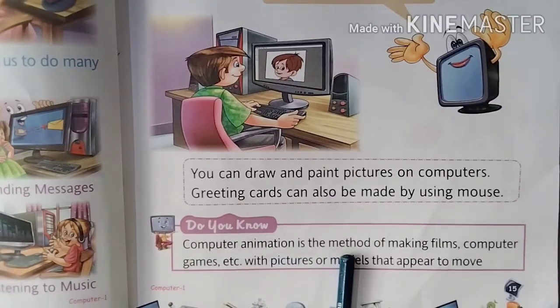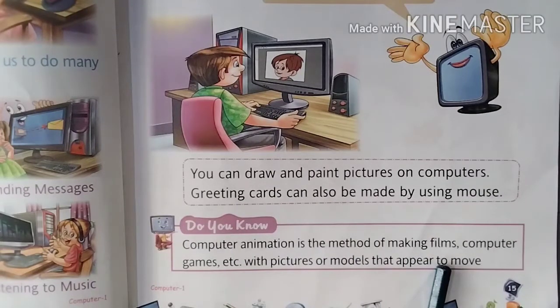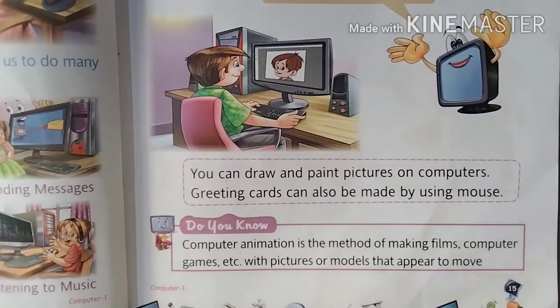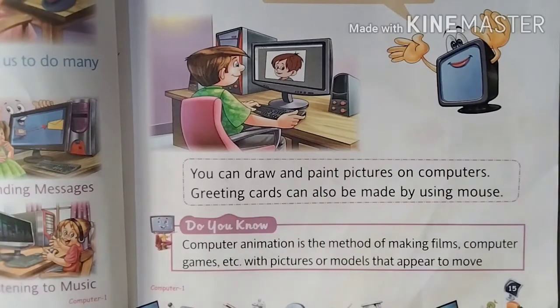Do you know? Computer animation is the method of making films, computer games, etc., with pictures or models that appear to move. Computer animation is the method of making films and computer games. It is possible only through computer animation — this is the movement of cartoons which is made with the help of computer animation. This method is used to make cartoon films, and it is called computer animation because it is made by computer. These are animated pictures called computer animation.